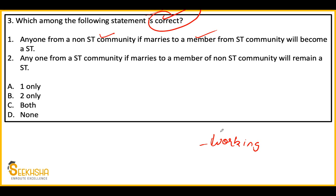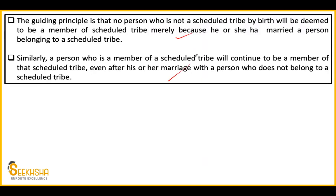The answer is Option B - only the second statement is correct. If anyone from a non-ST community marries a member of an ST community, they will still remain in the non-ST community - he or she will not enter the ST tribe. And if an ST man or woman marries someone from the general category, that man or woman will still remain in the Scheduled Tribe and will continue to receive the benefits that Scheduled Tribes get. This is a very important point. You can pause and take a screenshot if you want.